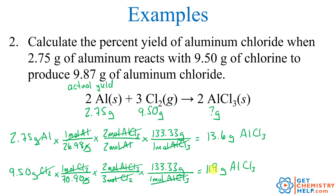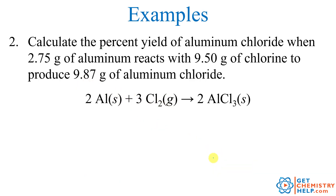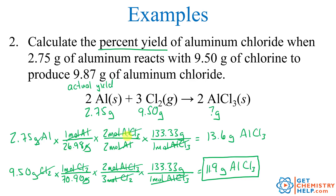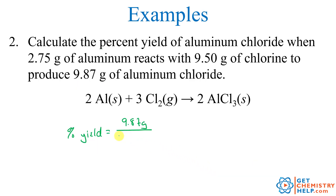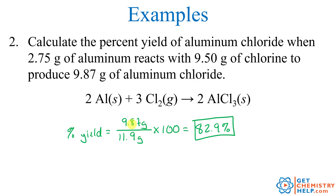So what's our theoretical yield? We pick the smallest: 11.9 grams is the amount we can make theoretically if everything goes flawlessly. But it didn't go flawlessly — we only made 9.87 grams. So the percent yield is the actual yield, 9.87 grams, divided by the theoretical yield, 11.9 grams, times 100. Using three significant figures, that gives 82.9%. So if you should have made 11.9 grams but actually made 9.87 grams, the percent yield is 82.9%.